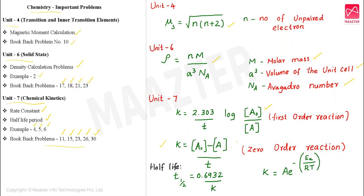This is an important formula. Next, in this unit there are many other questions based on the half-life period. We know the formula: T½ equal to 0.6932 divided by K, where K is the rate constant. This formula is related to important problems.